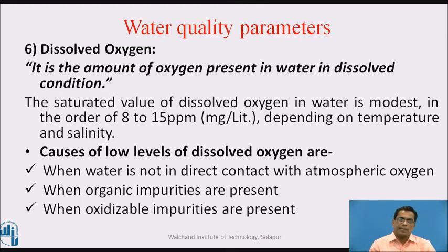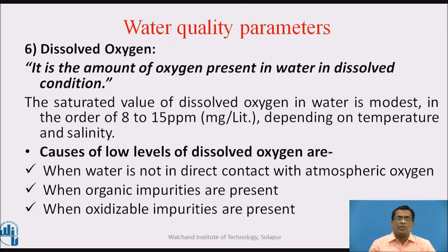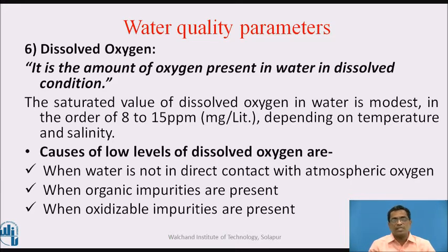Sixth: dissolved oxygen. It is the amount of oxygen present in water in dissolved condition. The saturated value of dissolved oxygen in water is in the order of 8 to 15 ppm, or milligrams per liter, depending on temperature and salinity of that particular water. The causes of low levels of dissolved oxygen include: when water is not in direct contact with atmospheric oxygen; when organic impurities are present in water; and when oxidizable impurities are present in water, these also reduce the dissolved oxygen level.